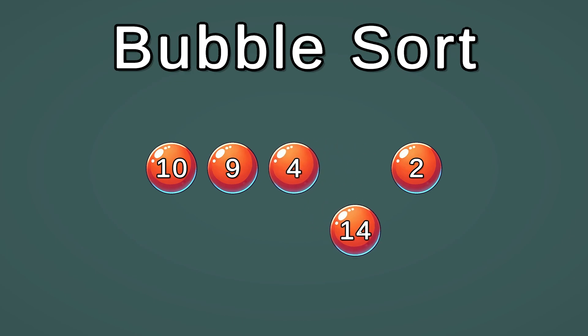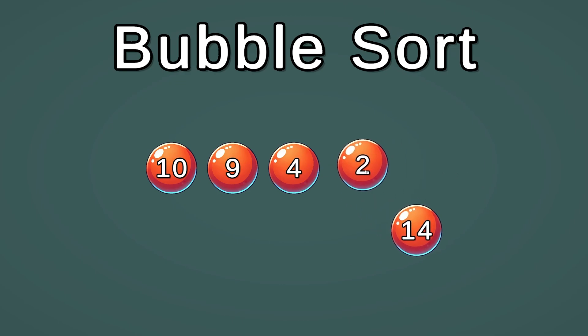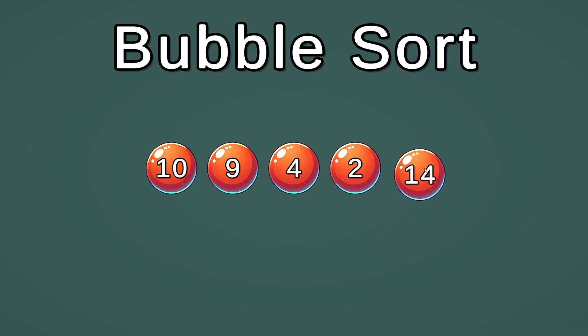We move 4 over and put 14 in its place. Then we compare with 2 — we need to swap those as well. Now we are at the end of our array, and 14 is in its final position.